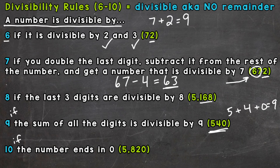And lastly, finally, we have an easy one. A number is divisible by 10 if the number ends in 0. So if a number ends in 0, we know that it's going to be divisible by 10 automatically.